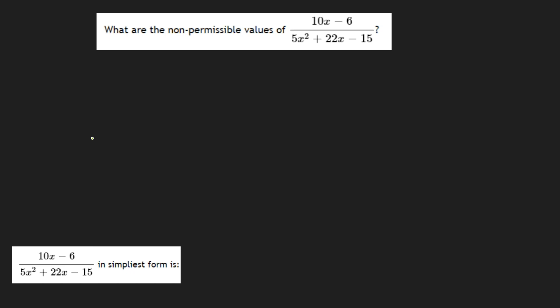So for the top one, for the numerator, the common factor is 2. So that would be 5x minus 3.